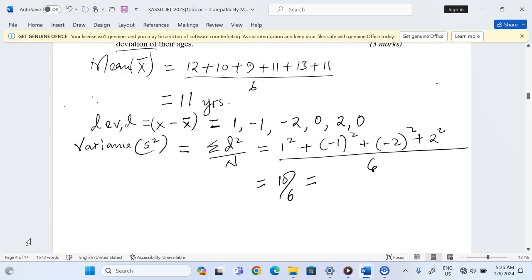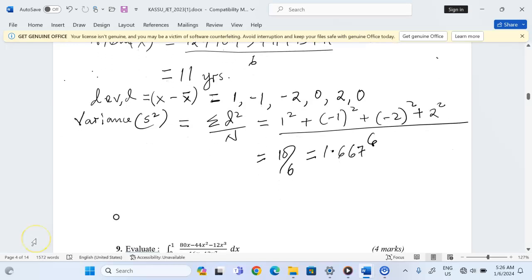Divided by 6, so 10 divided by 6 becomes 1.6667 to four significant figures. That becomes our variance.